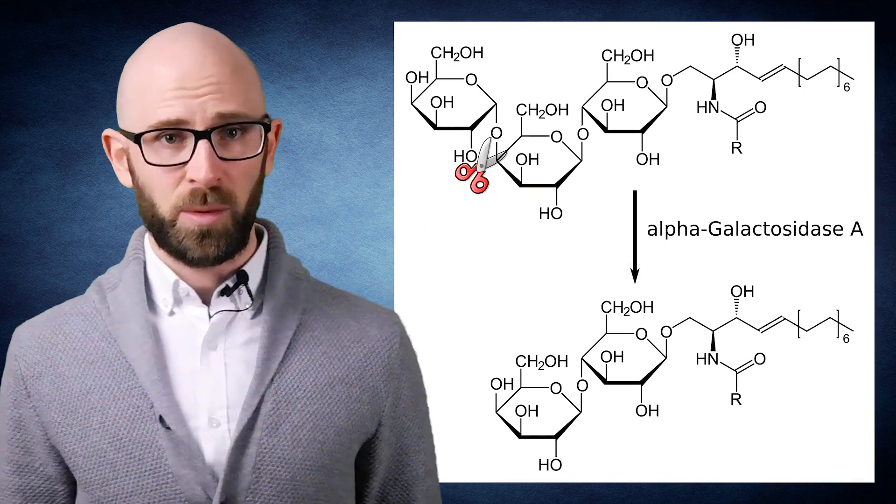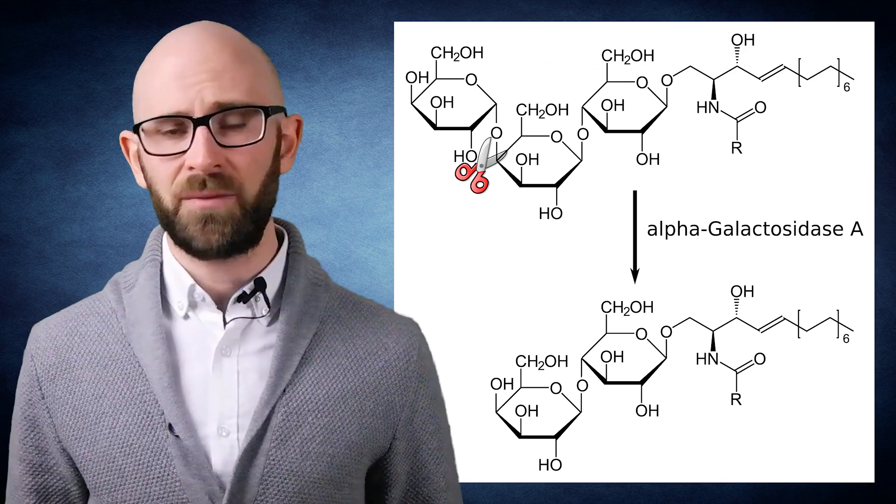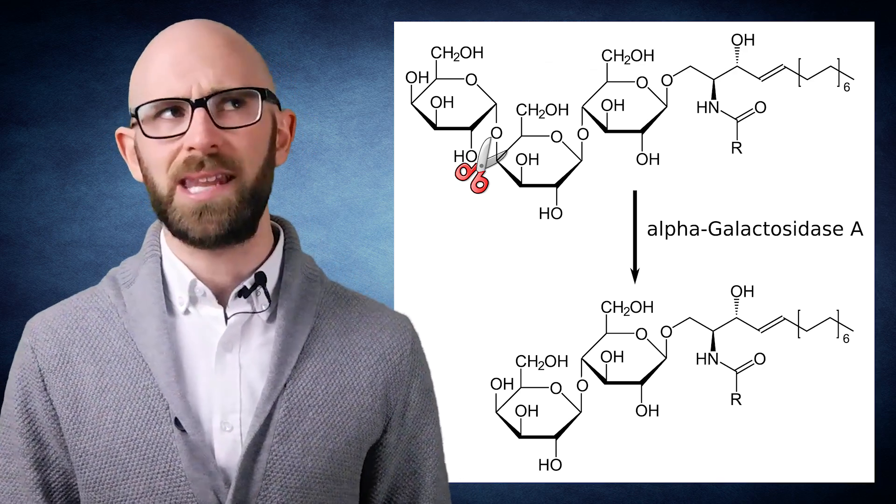For instance, there is a type of mold called Aspergillus niger that contains an enzyme, alpha-galactosidase, that will break down oligosaccharides, preventing your large intestinal bacteria from creating gas. You can buy it at stores everywhere under the auspicious name Beano.